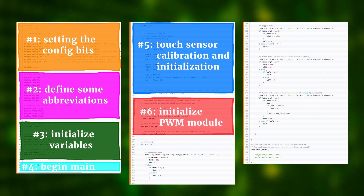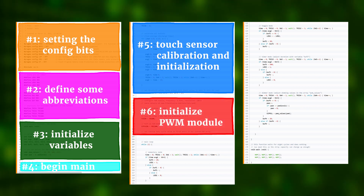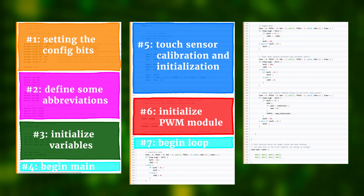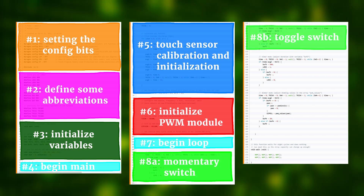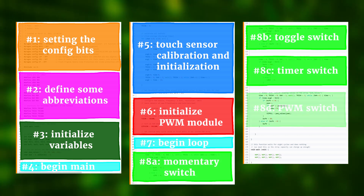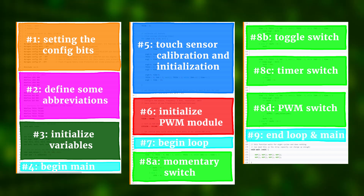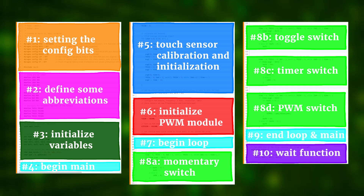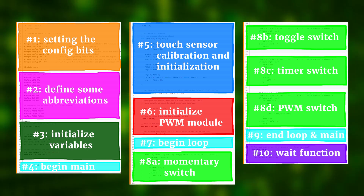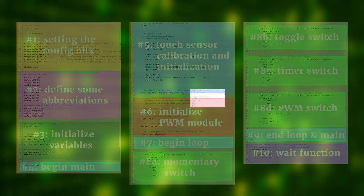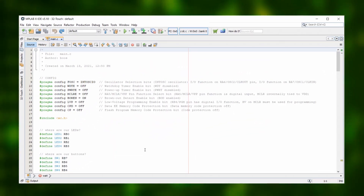Because one of those channels dims an LED, we also need to set up the pulse width modulation module, or PWM for short. Then the main loop begins and in it we cycle through all 4 channels and check if they are pressed or not. After the main loop and the main function close, we define a wait function that we need in the main body of the program. So now let's have a detailed look at the source code inside the MPLAB10 IDE.